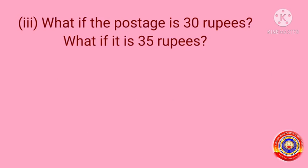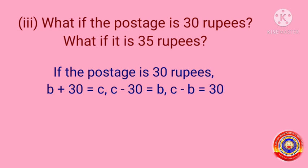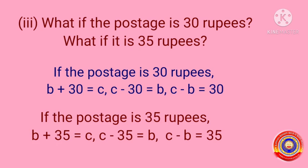What if the postage is 30 rupees, and what if it is 35 rupees? If the postage is 30 rupees, we can write the relation as B plus 30 is equal to C, then C minus 30 is equal to B and C minus B is equal to 30. If the postage is 35 rupees, we can write the relation as B plus 35 is equal to C, then C minus 35 is equal to B and C minus B is equal to 35.